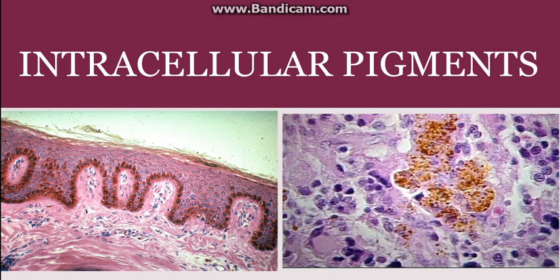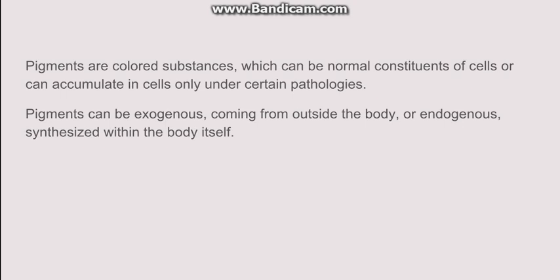In this video we will discuss intracellular pigments. Pigments are basically colored substances which are normal constituents of the cell, like melanin, or they can accumulate in the cells only under certain pathologies. They can be mainly divided into exogenous pigments, which come from outside the body, and endogenous pigments, which are synthesized within the body itself.